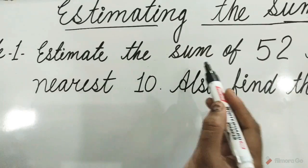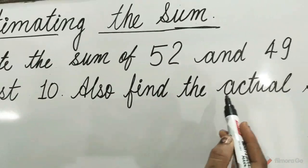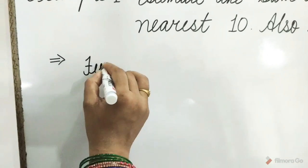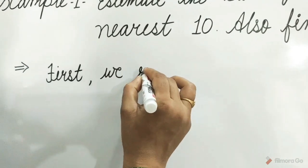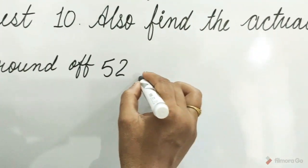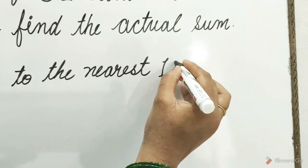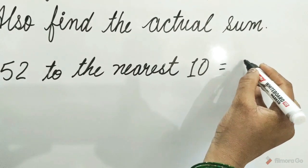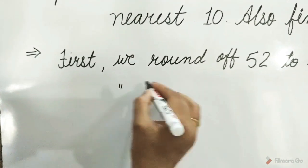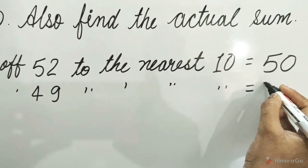Example 1. Estimate the sum of 52 and 49 to the nearest 10. Also find the actual sum. So children, first we round off 52 to the nearest 10, and 52 will be 50. Now we round off 49 to the nearest 10, which is equal to 50.